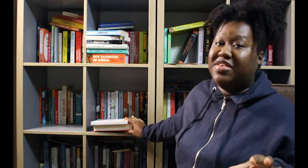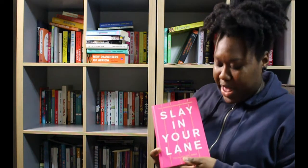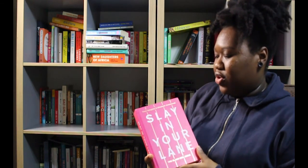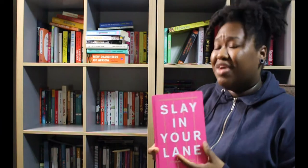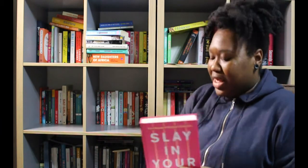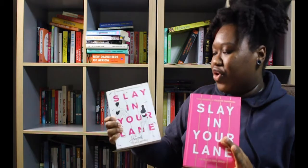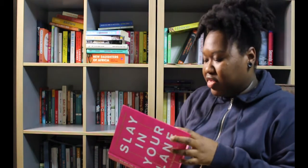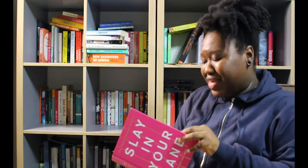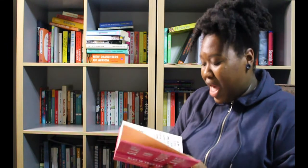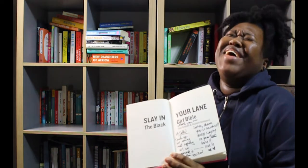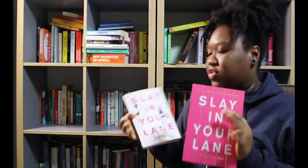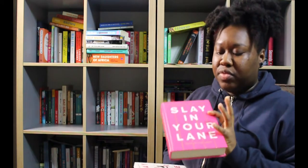Last but not least, these two. We've got Slaying Your Lane: The Black Girl's Bible by Yomi Adegoke and Elizabeth Uviebinené - I hope I feel like I've mashed up her name, but I'm sorry. And then I've got Slaying Your Lane: The Journal. This is the book and this is the journal. Again, this is signed. Before pandemic times, I used to love going to book signings.